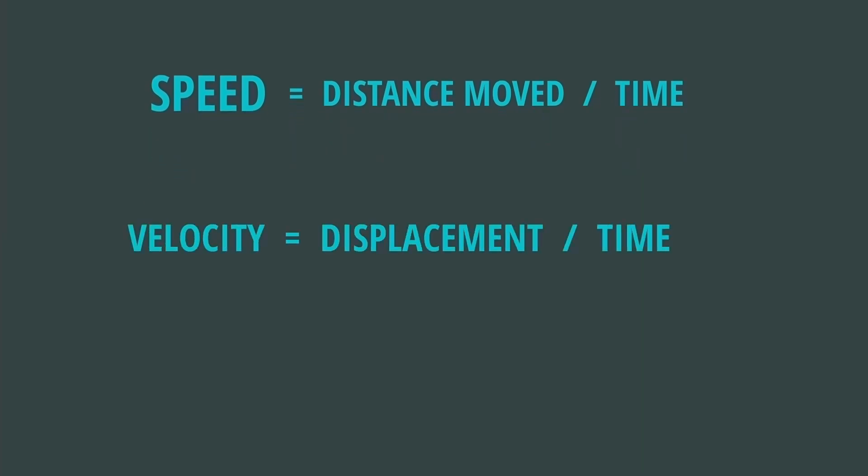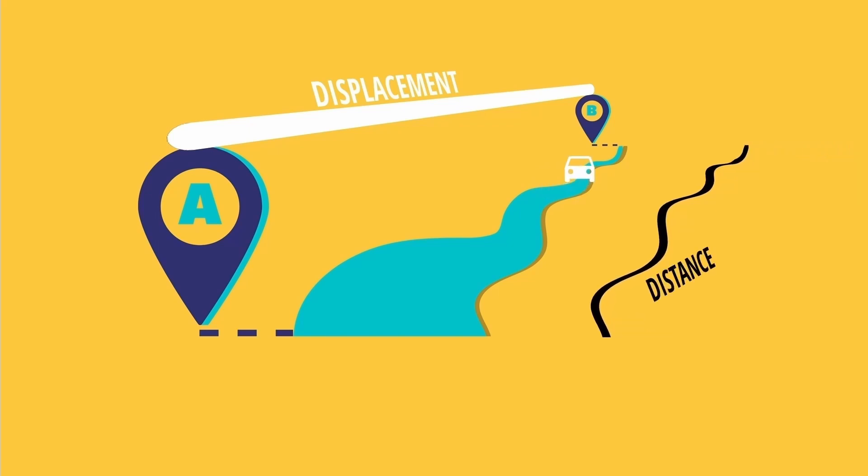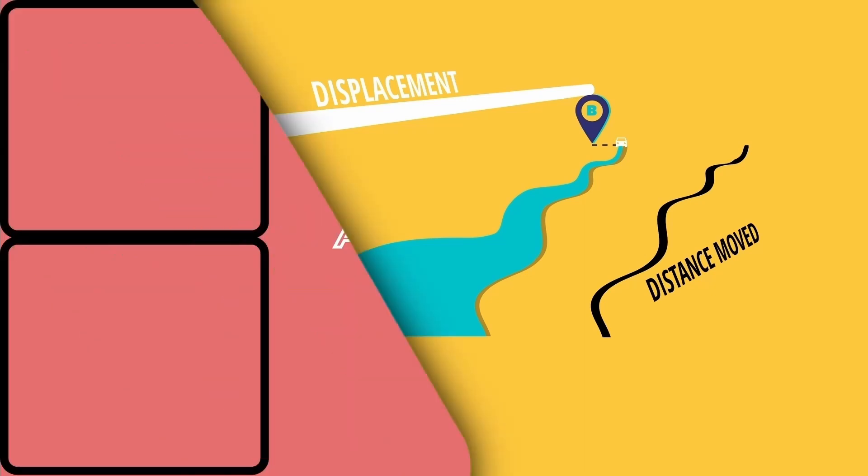So what's the difference? If a car is traveling from A to B, the number in the speedometer is the speed. The distance between two points is the displacement of the car. Or displacement is the length of a straight line connecting two points. The distance moved is the length of the road the car traveled.